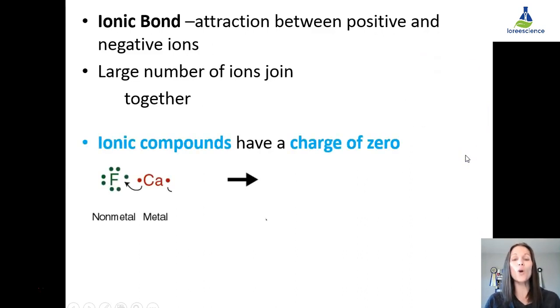Ionic compounds always have a charge of zero. When we have our non-metal, fluorine here, and our metal, calcium, if we take a look, these are Lewis dot diagrams, fluorine having seven valence electrons, calcium having two, calcium wants to give one away, fluorine will take that. However, calcium still has one more electron to give, so it needs another fluorine to give that too, otherwise it would remain charged.